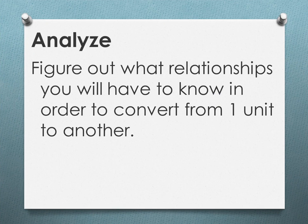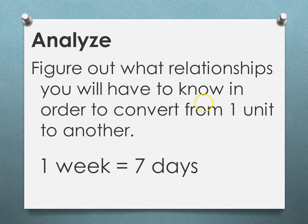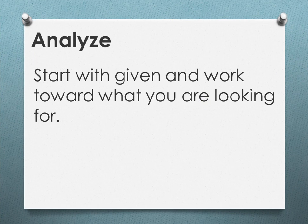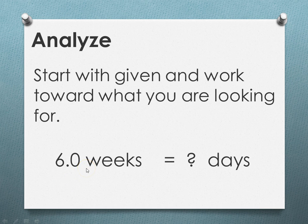Analyze. Figure out what relationships you have to know in order to convert from the one unit to the next. In this case, one week is equal to 7 days. And then we're going to start with our given and work toward what we're looking for. And our given, remember, was 6.0 weeks, and the unknown was how many days.